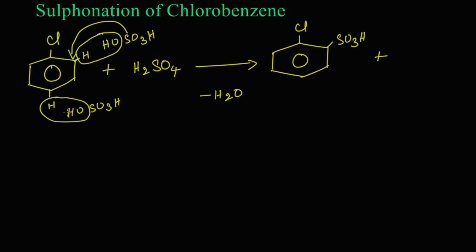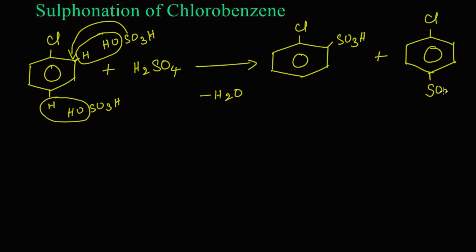If the reaction takes place in the para position, the hydrogen from the para position of chlorobenzene and OH from the sulfuric acid will leave as a water molecule, and the SO₃H replaces this hydrogen. We get a product which is known as 4-chlorobenzene sulfonic acid.